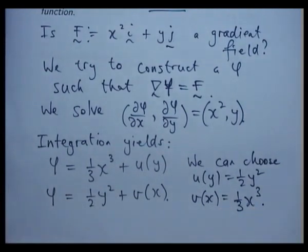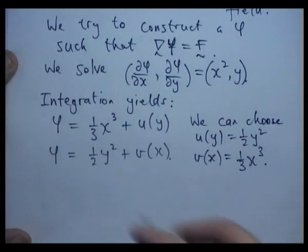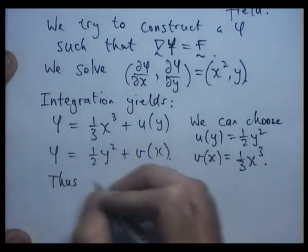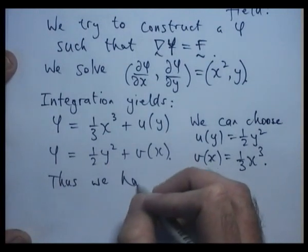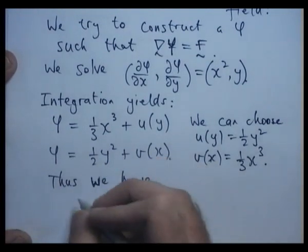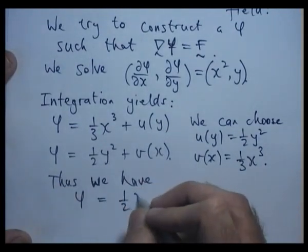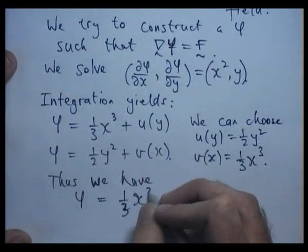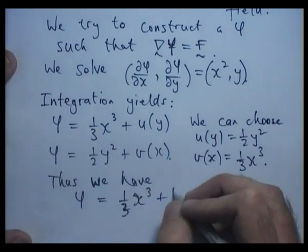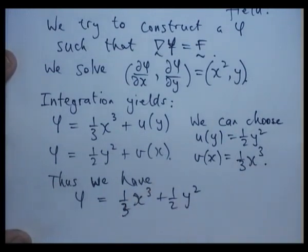Through those choices, the two equations are one and the same, right? Thus, we have phi to be, let's do the x first, one third x cubed plus one half y squared. If you really want to, you can put a constant in there.